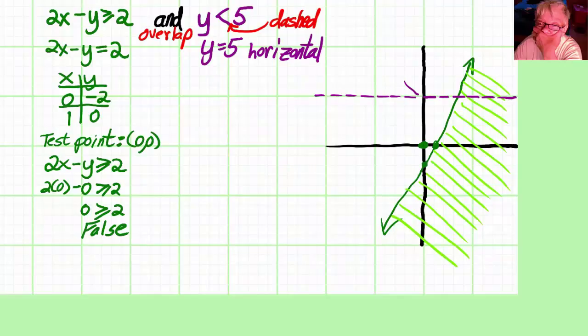Which goes through 5 on the y-axis, the point (0,5). Now I choose my test point, which again is going to be (0,0).